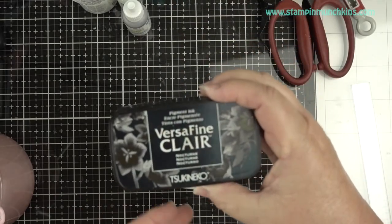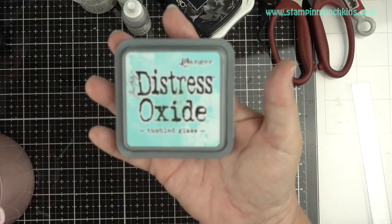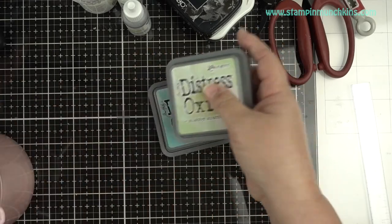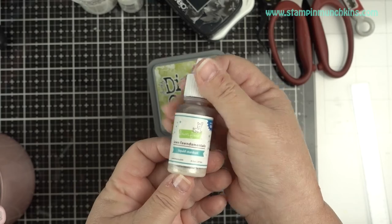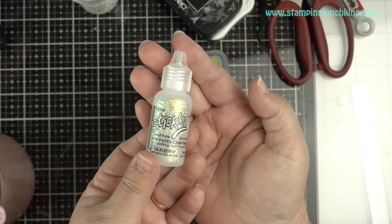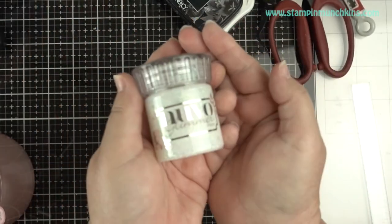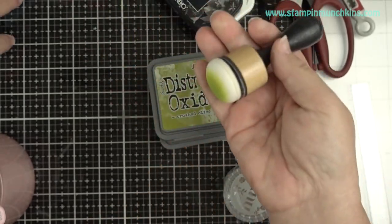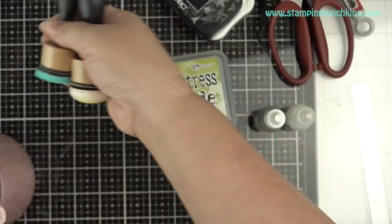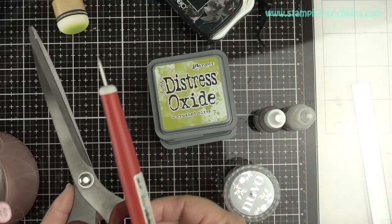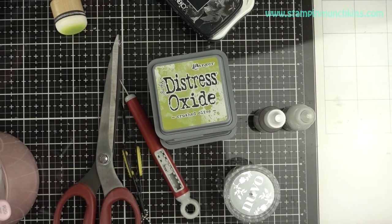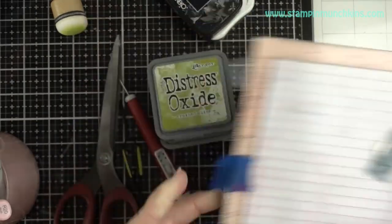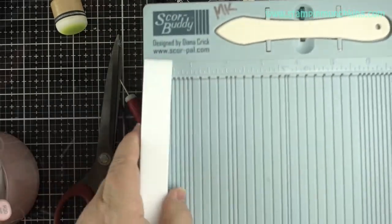Memento Tuxedo Black, VersaFine Clear in Nocturne, Distress Oxide in Tumbled Glass, Shabby Shutters, Mowed Lawn and Crushed Olive, Lawn Fawn Liquid Stardust Stickles Moon Dust in Nuvo, and blending tools.